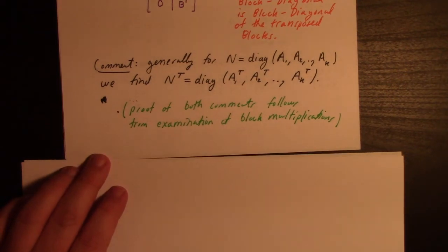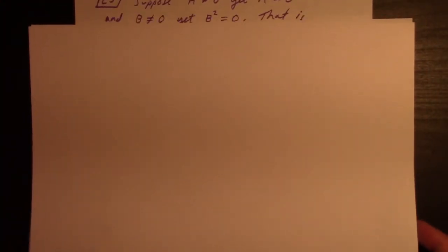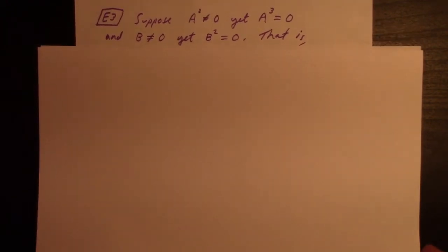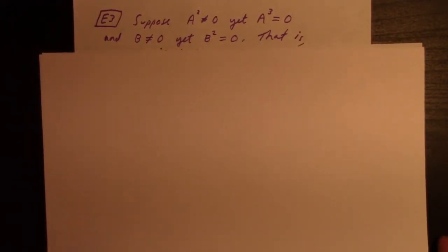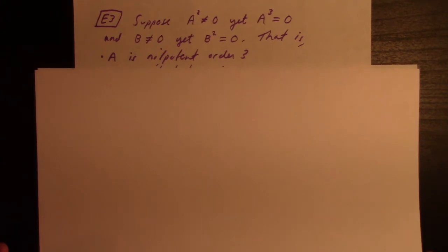Proof of these comments follows from examination of block multiplication as outlined in the notes. Example three: suppose A squared is not zero, yet A cubed is zero, and suppose B is not zero, yet B squared is zero. In other words, A is nilpotent of order three, B is nilpotent of order two.